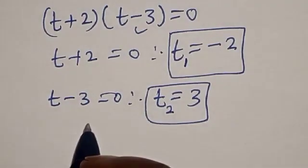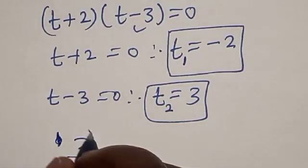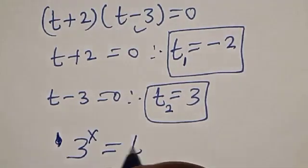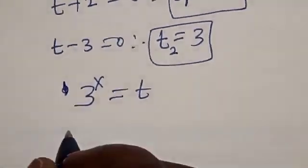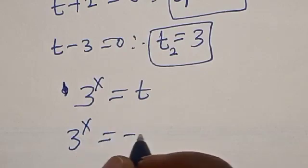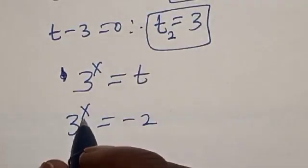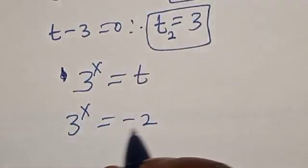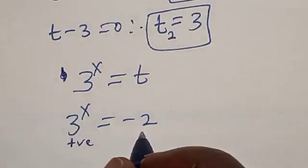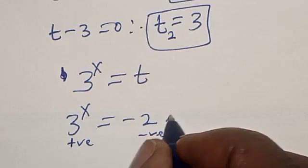But note that, remember that 3 raised to the power x is equal to t. So 3 raised to power x equals minus 2. But 3 raised to power x cannot equal minus 2 because the left side is positive and minus 2 is negative. We reject this solution.